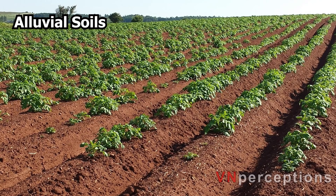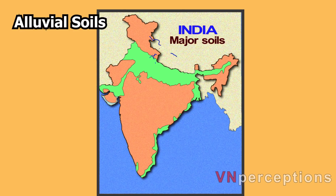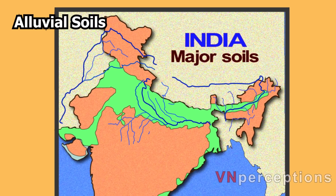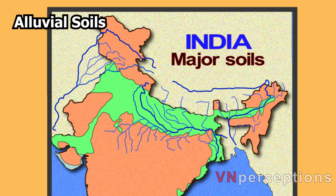Alluvial soil occupies 40% of the land area in India. It is formed by the depositional work of rivers, which is why it is known as riverine soil. These soils are found in river basins and deltas. A river basin refers to an area covered by the main river and its tributaries, and a delta refers to the triangular-shaped land between the distributaries of rivers.